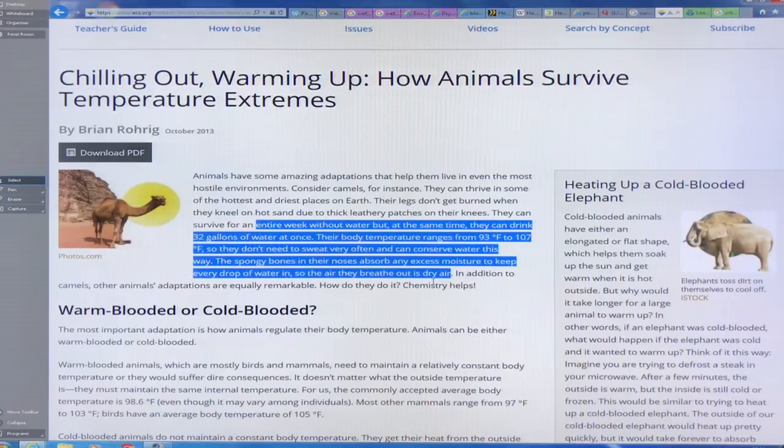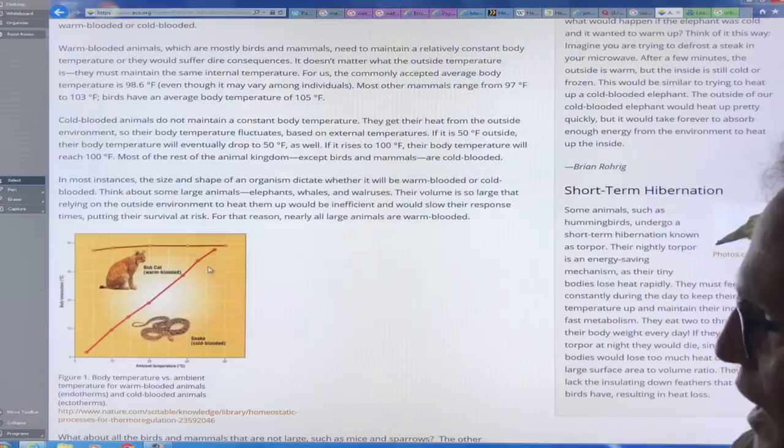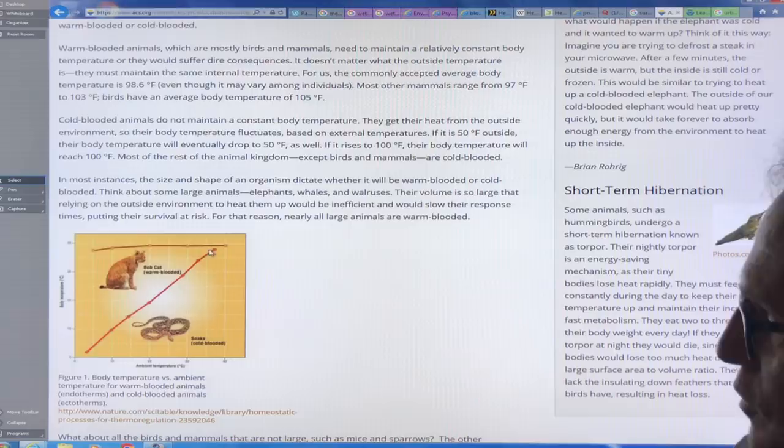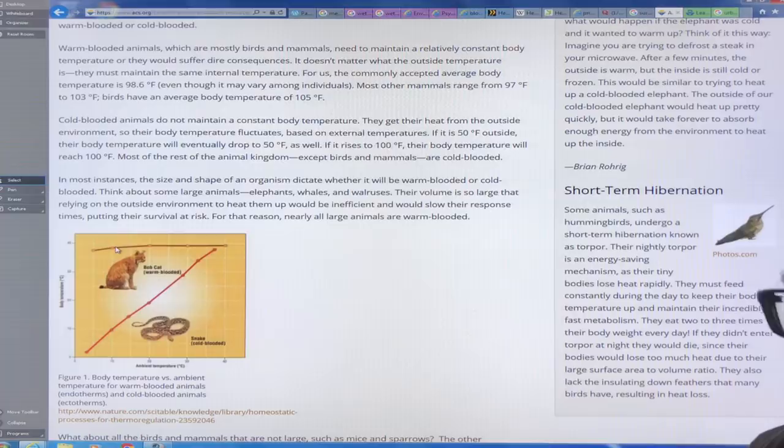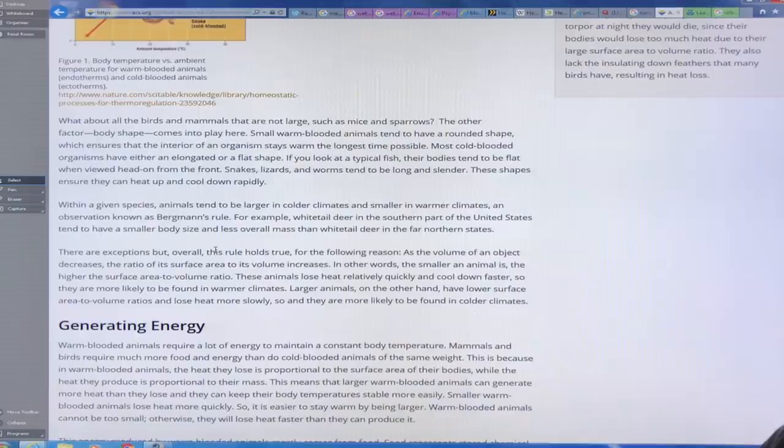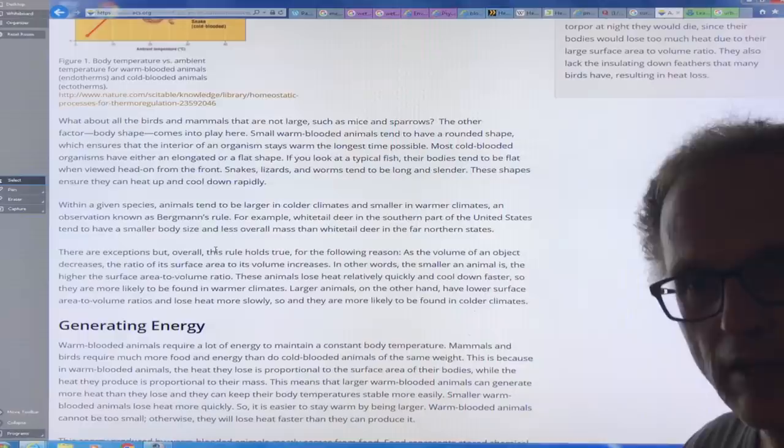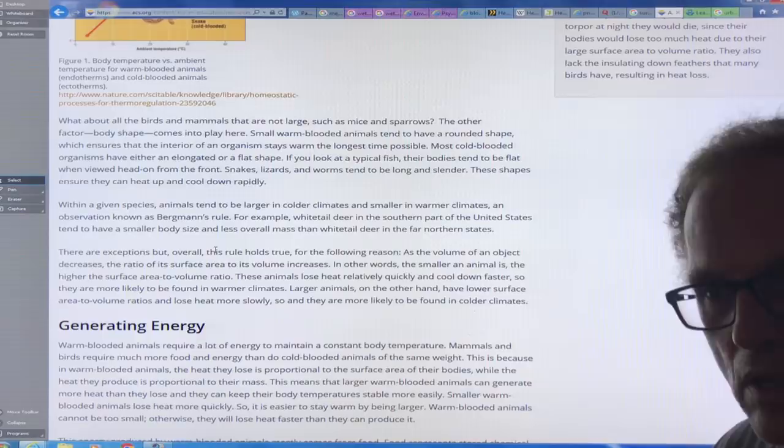Their body temperature ranges from 93 to 107. They don't sweat. They conserve water. They have spongy bones in their noses that absorb excess moisture. So when they breathe out the water, the air they breathe out is very, very dry. They don't breathe out water. They don't lose the water. So adaptation is very important. This is, if this is the ambient temperature and this is the body temperature, of course, the cold blooded animals, they track up linearly. They can't regulate their body temperature. This is for example, a bobcat, warm blooded. They regulate their temperature within a tight limit. And if you go beyond or below hyperthermia, hypothermia, you get into deep trouble.